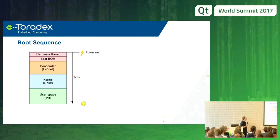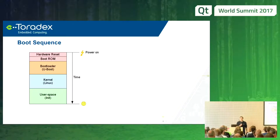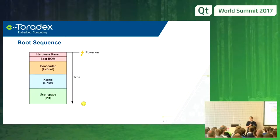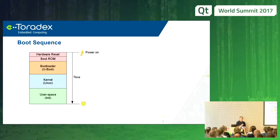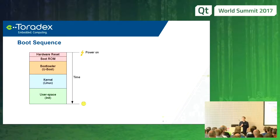A short overview of the boot sequence: first there is hardware reset and hardware initialization, then the boot ROM, which is usually part of the SoC in the ARM world. Then the bootloader — in embedded devices with ARM, that's typically U-Boot. Then we have the operating system kernel, Linux. And finally, the user space and init system.